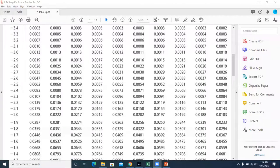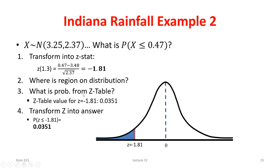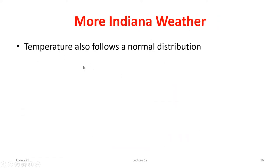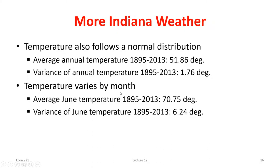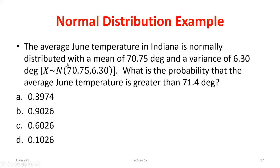Now we add something slightly different — we'll actually have a fourth step. We can do the same thing for temperature. Breaking temperature down by month, it looks pretty close to a normal distribution. We can find different means and variances for different months like June and February. Something interesting to notice: the temperature in June has much less variation than temperature in February.